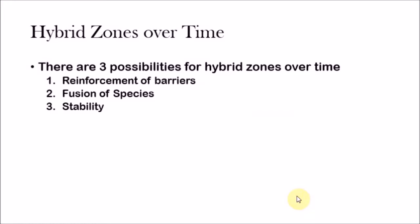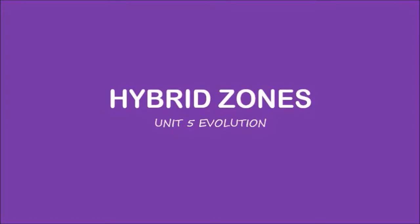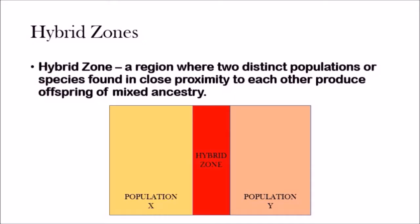When we talk about hybrid zones, there are three things that can happen whenever a hybrid zone is formed: reinforcement of barriers, fusion of species, and stability. Reinforcement is when there's a strengthening of reproductive barriers. So with time, the hybrid zone would cease to exist, the reproductive barriers come back, and this hybrid zone just kind of disappears.